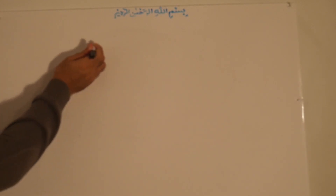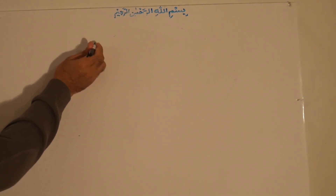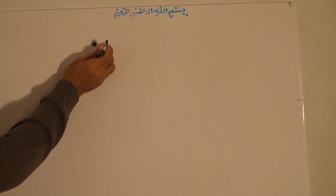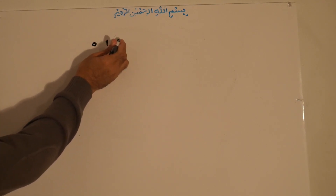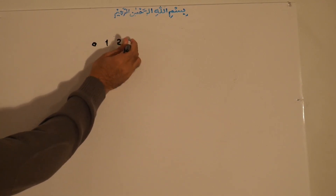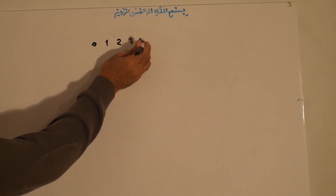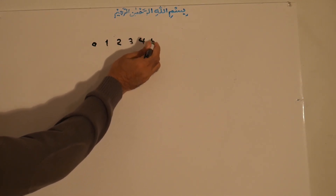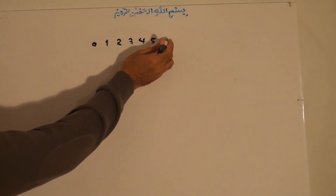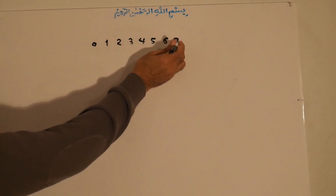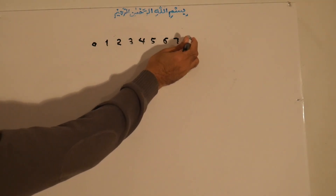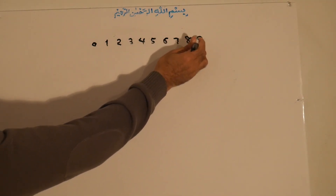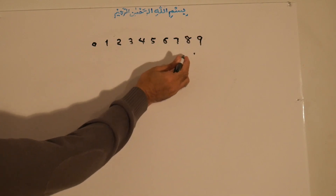The numbers, for example, are: zero, one, two, three, four, five, six, seven, eight, nine. These are the ten basic digits used in our number system.